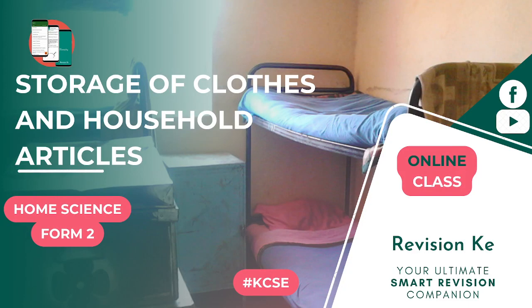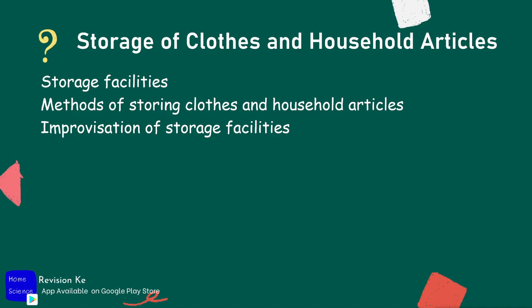Under this topic on storage of clothes and household articles, you the learner should be able to store clothes and articles. The second objective is to improvise storage facilities for clothes and household articles. Those are the objectives of this topic, and this is what you are expected to learn — this is the expectation of the examiners.